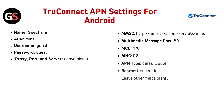True Connect APN settings for Android. Fill out the following fields. Name: Spectrum. APN: MMS. Username: Guest. Password: Guest. Proxy, Port, and Server: leave blank.